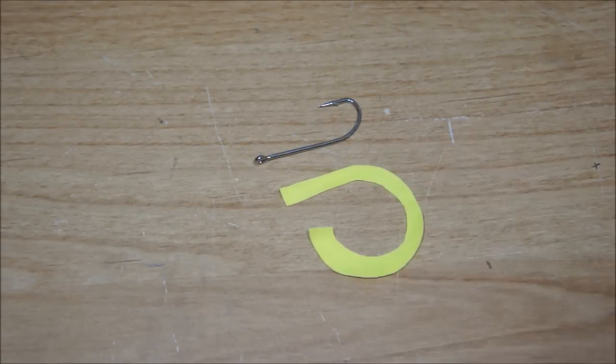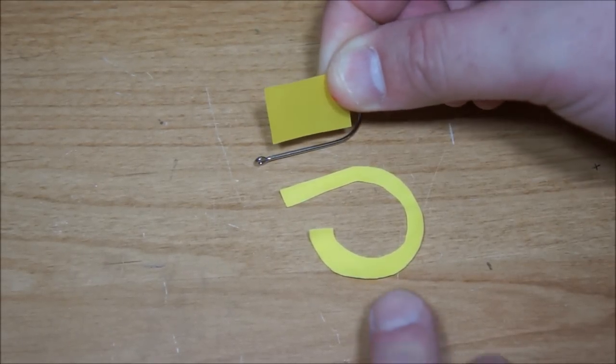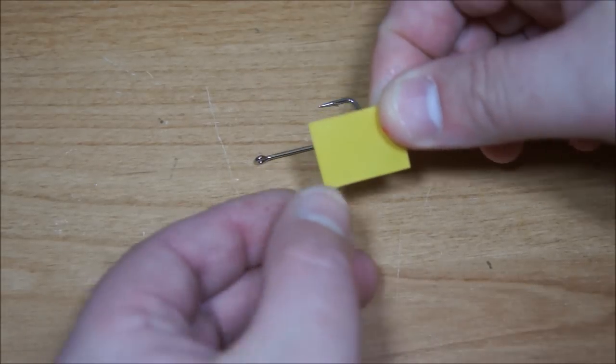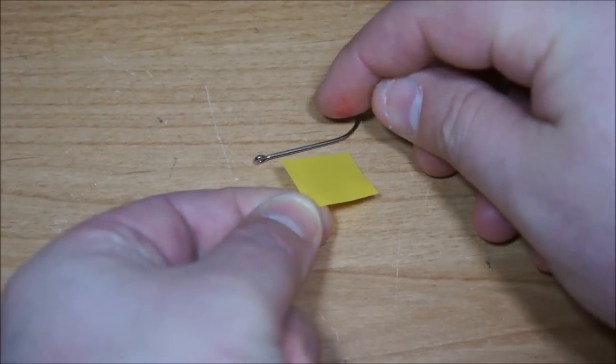So as we attach the tail to the hook temporarily I'm going to use a piece of tape. And I'm just going to trim this. It needs to be about the same length as the distance between the eye and the end of this point here.